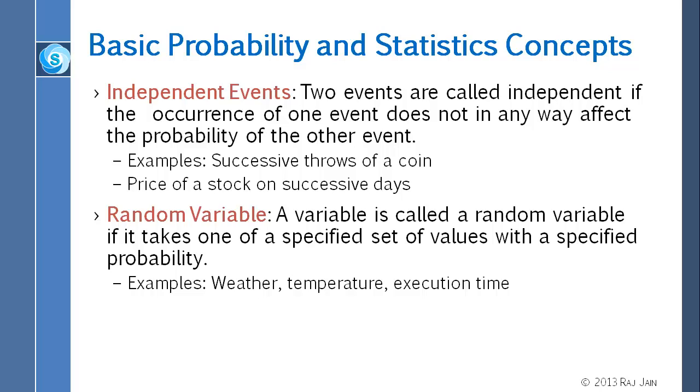The first thing we sometimes use is independent events. Two events are called independent if occurrence of one does not in any way affect the probability of the other. If you have thrown a coin once and it came out head, if you throw it one more time, is the probability of head higher or lower? For a fair coin, it doesn't matter. Those are independent throws.